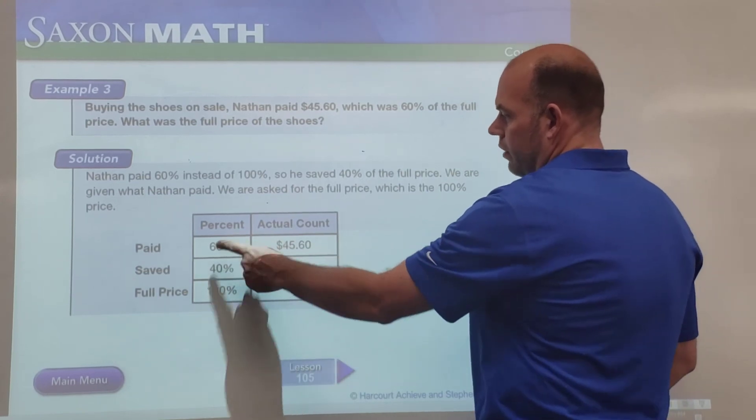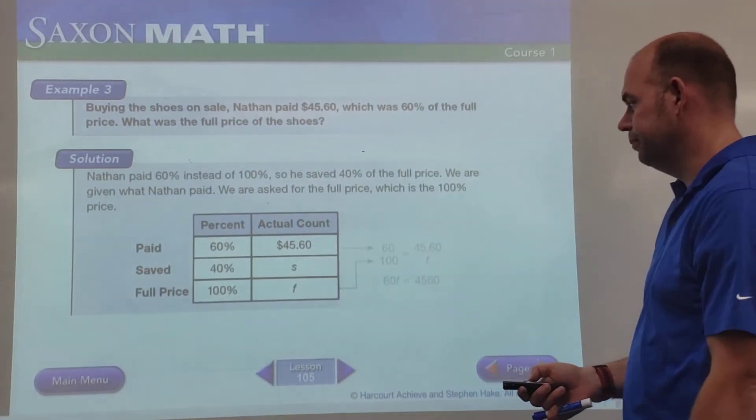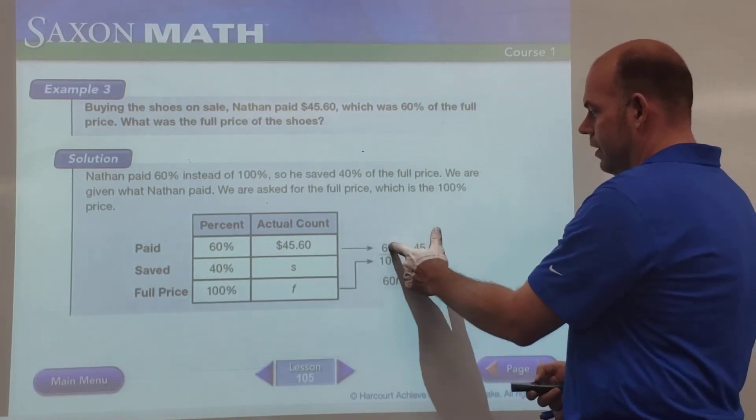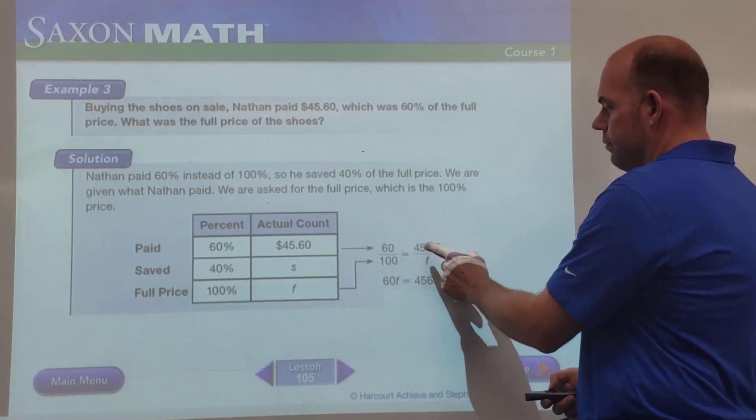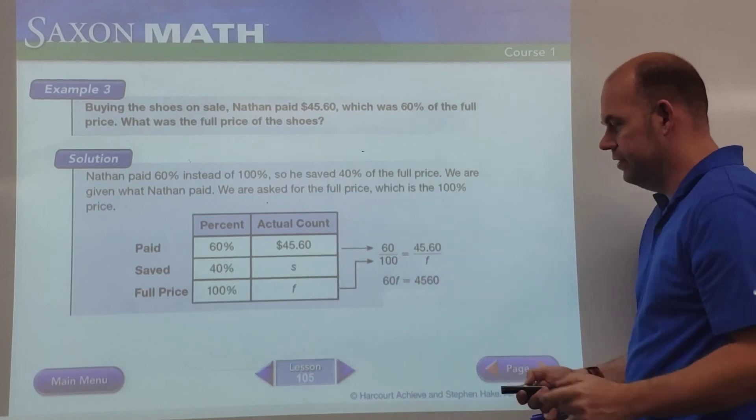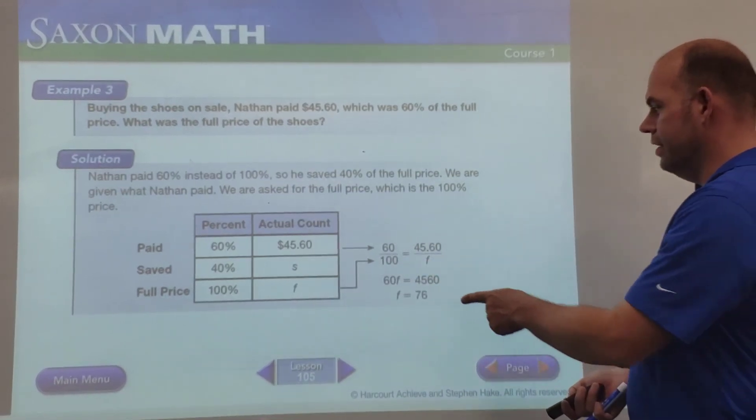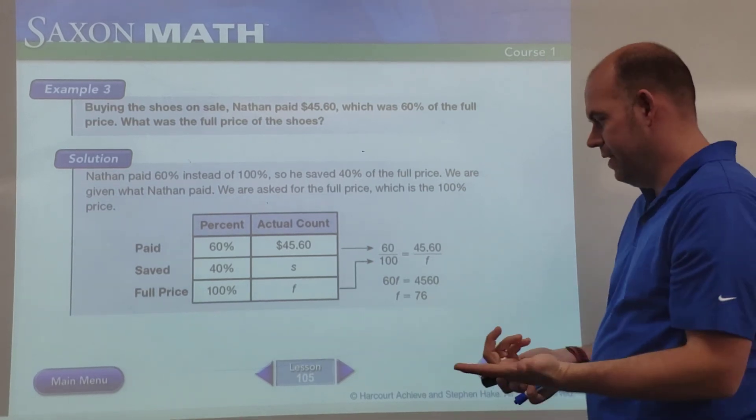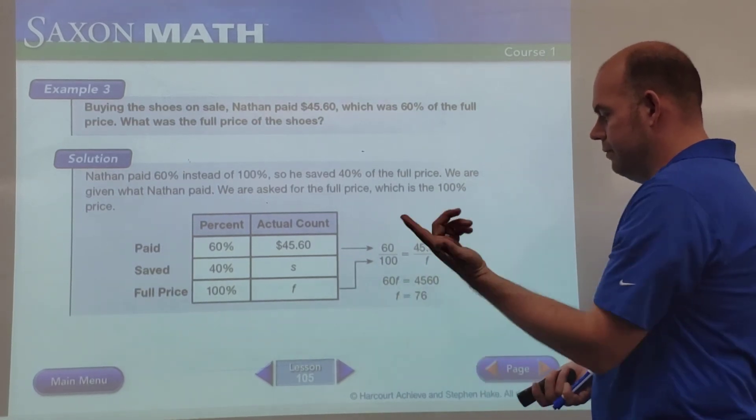So we're really interested in this f. So we'll take our 60 and 100, $45.60 over f. All right, that's what we've got here. Multiply them out: f times 60 is 60f, $45.60 times 100 is 4560. Then they just divided it this time. They didn't do their factors, I don't know why, but f equals 76.